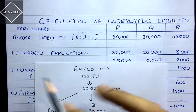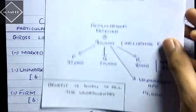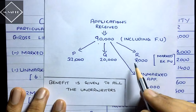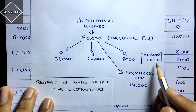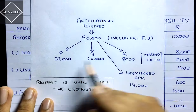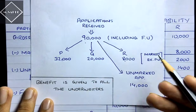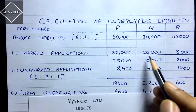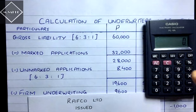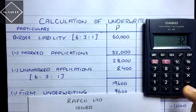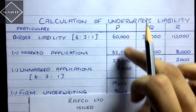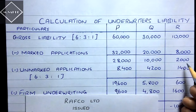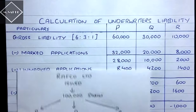Next, subtract the marked applications. The marked applications are 32,000, 20,000, and 8,000 — and since they are excluding firm underwriting, just take them directly. So: P: 60,000 − 32,000 = 28,000; Q: 30,000 − 20,000 = 10,000; R: 10,000 − 8,000 = 2,000.